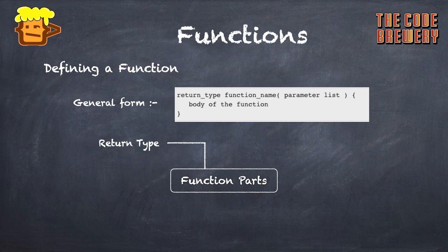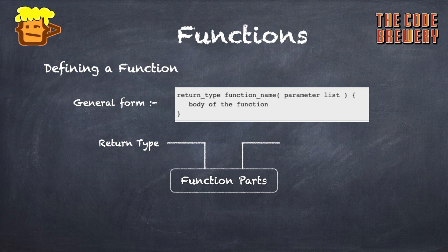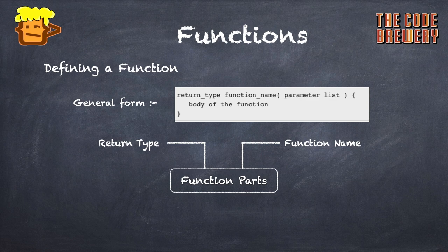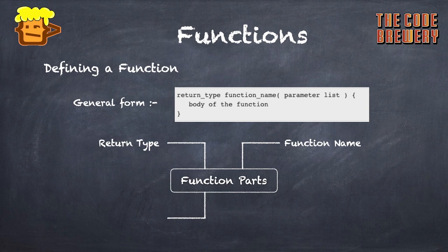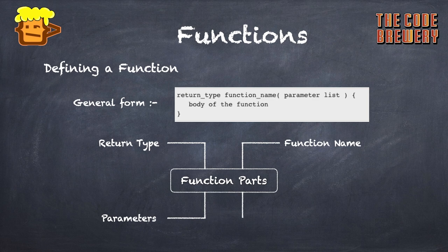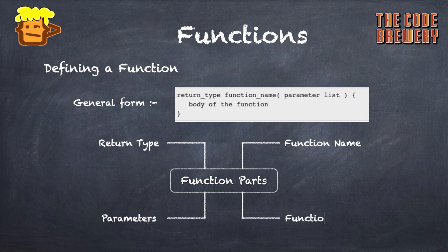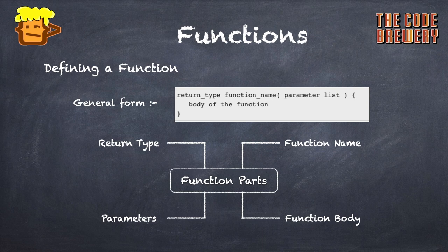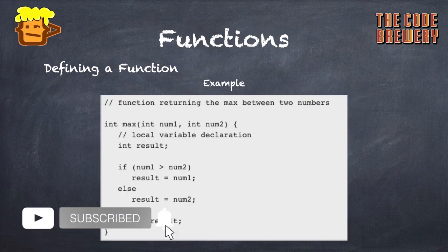If you want to add the parameter list, we declare it by using commas between them if we want to declare one or more. Then parenthesis, and within the parenthesis the body of function is written. Function parts are: return type, function name, the parameters, and the body of function.